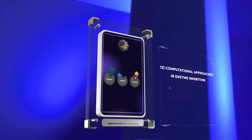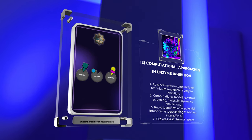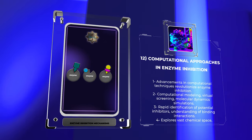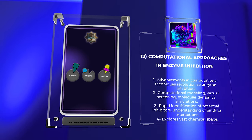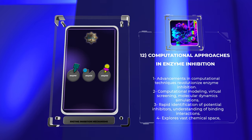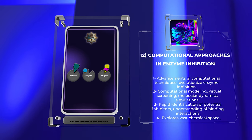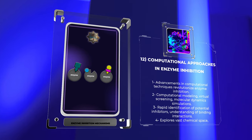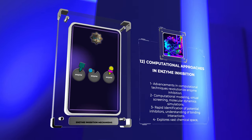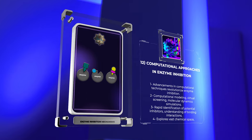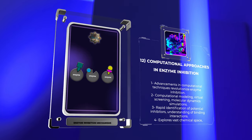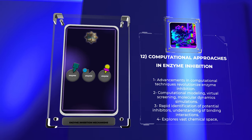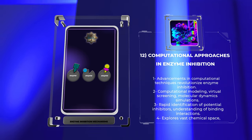Advancements in computational techniques have revolutionized the field of enzyme inhibition. Computational modeling, virtual screening, and molecular dynamic simulations aid in the rapid identification of potential inhibitors and understanding their binding interactions with target enzymes. By leveraging computational approaches, researchers can explore a vast chemical space, optimize drug candidates, and predict the inhibitory potency and selectivity of compounds before experimental validation. This integration of computational and experimental methodologies expedites the process of drug discovery.